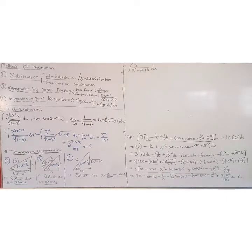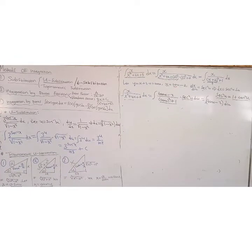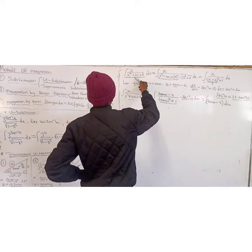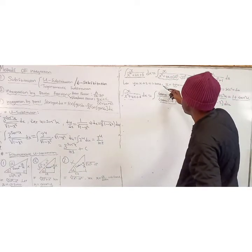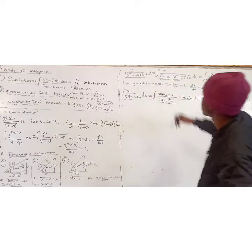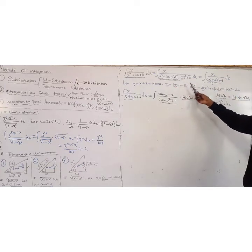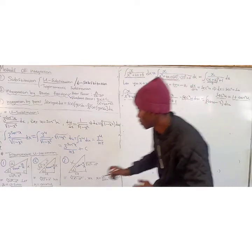Proceeding with trig substitution, suppose we integrate x over x squared plus 4x plus 5 dx. First, we complete the square: x squared plus 4x plus 5 becomes x squared plus 4x plus 4 minus 4 plus 5, which is (x plus 2) all squared plus 1. Since we're applying trig substitution, the applicable form is a squared plus something squared, with a squared equal to 1, so a equals 1.